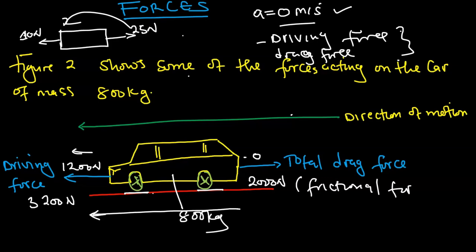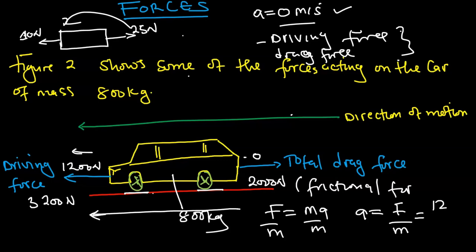To find the acceleration, use the formula force equals mass times acceleration. Making acceleration the subject: acceleration equals force divided by mass. So acceleration equals 1,200 divided by 800, where 800 kilograms is the mass of the car. Therefore, the acceleration is 1.5 meters per second squared.